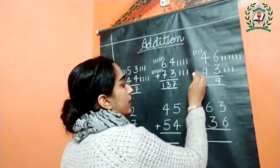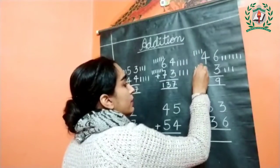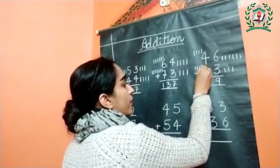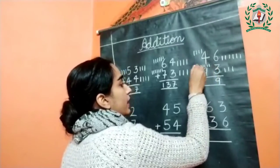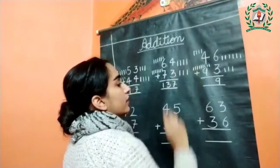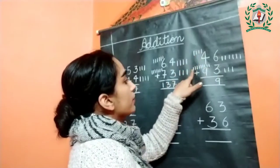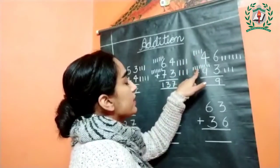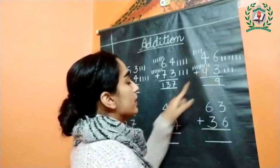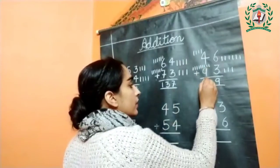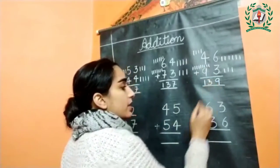Next, four lines: one, two, three, and four. Then nine lines: one, two, three, four, five, six, seven, eight, and nine. Count together: one, two, three, four, five, six, seven, eight, nine, ten, eleven, twelve, and thirteen. The total number is one hundred thirty-nine.